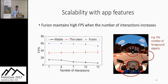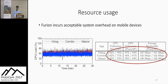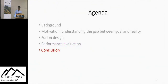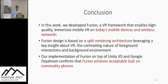We also evaluated scalability, finding that Furion maintains high FPS even as the number of foreground interactions increases. Resource usage and thermal performance were also evaluated, and Furion does not hit the thermal limit within 30 minutes of usage. In conclusion, we developed Furion, a VR framework that enables high-quality immersive mobile VR on today's mobile devices and wireless networks. The design is based on a split rendering architecture leveraging the contrasting nature of foreground interactions and background environments, and our implementation on Unity and Google Daydream confirms acceptable QoE on commodity phones.